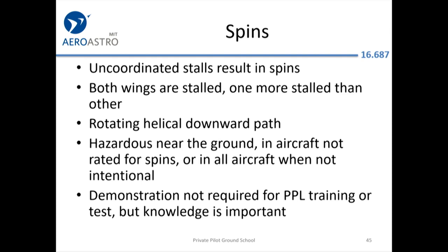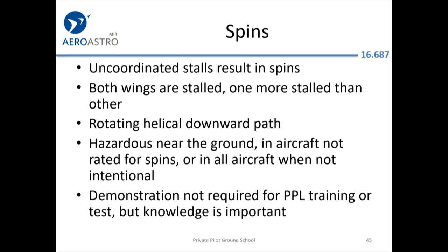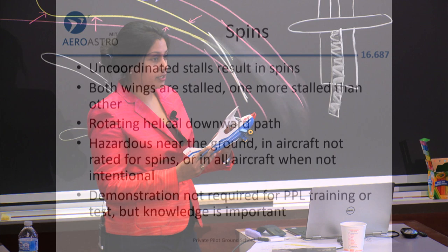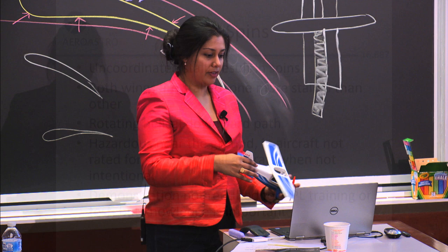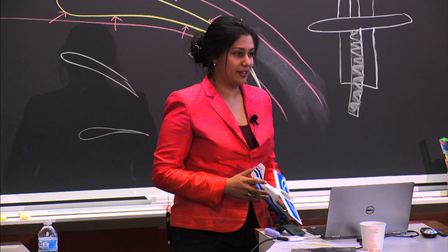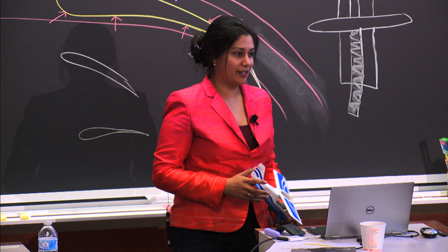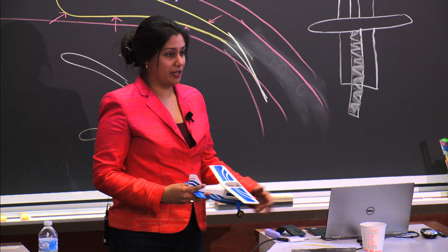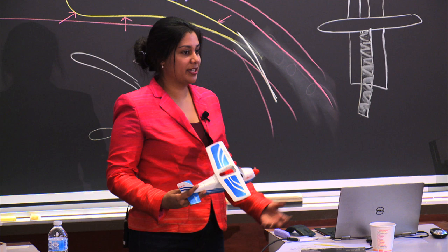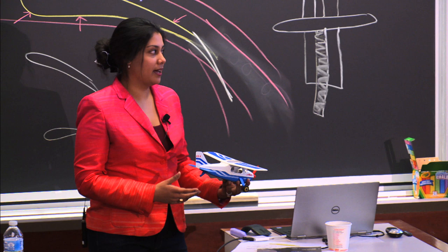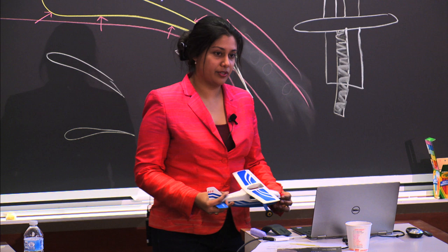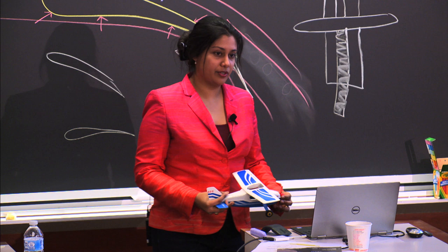The other thing that can happen after a stall is you can enter a spin. This is when you are uncoordinated in your stall — where your roll and yaw are not going in the same direction. Both wings have stalled, but one may be more stalled than the other. This is very dangerous close to the ground. You only intentionally do this in certain aircraft, wearing parachutes, in certain airspace, when you're very high above the ground. If you're getting your private pilot's license, you won't practice a spin — but you do have to learn about it and make sure you don't get into one.